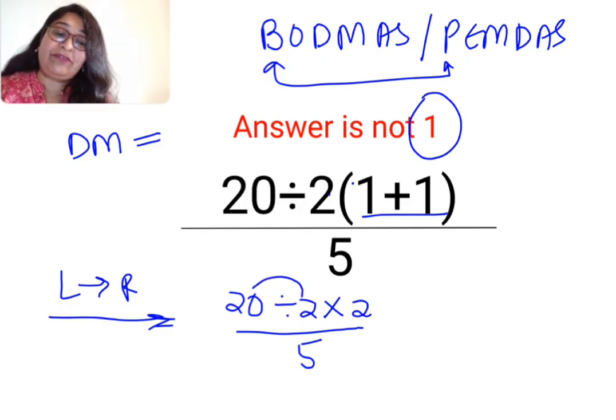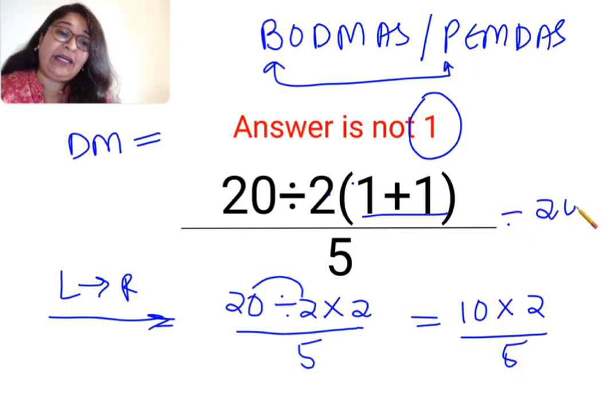So 20 divided by 2 is my first operation which is 10 multiplied by 2 upon 5. So 10 multiplied by 2 is 20 upon 5. So the answer for this question is supposed to be 4.